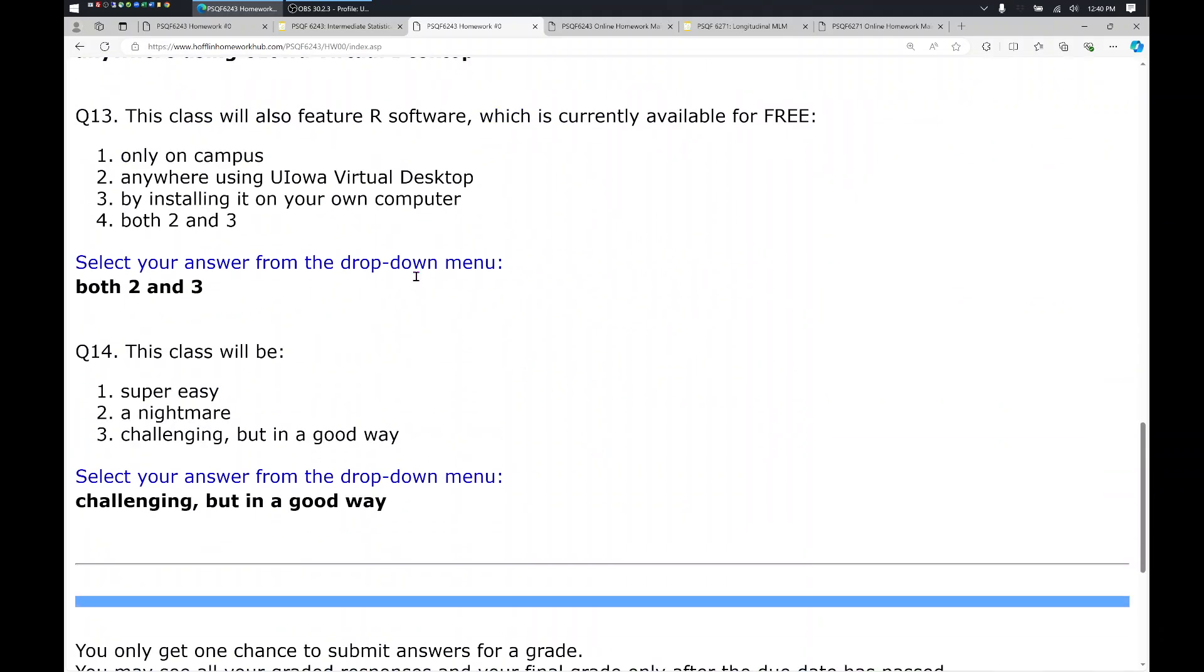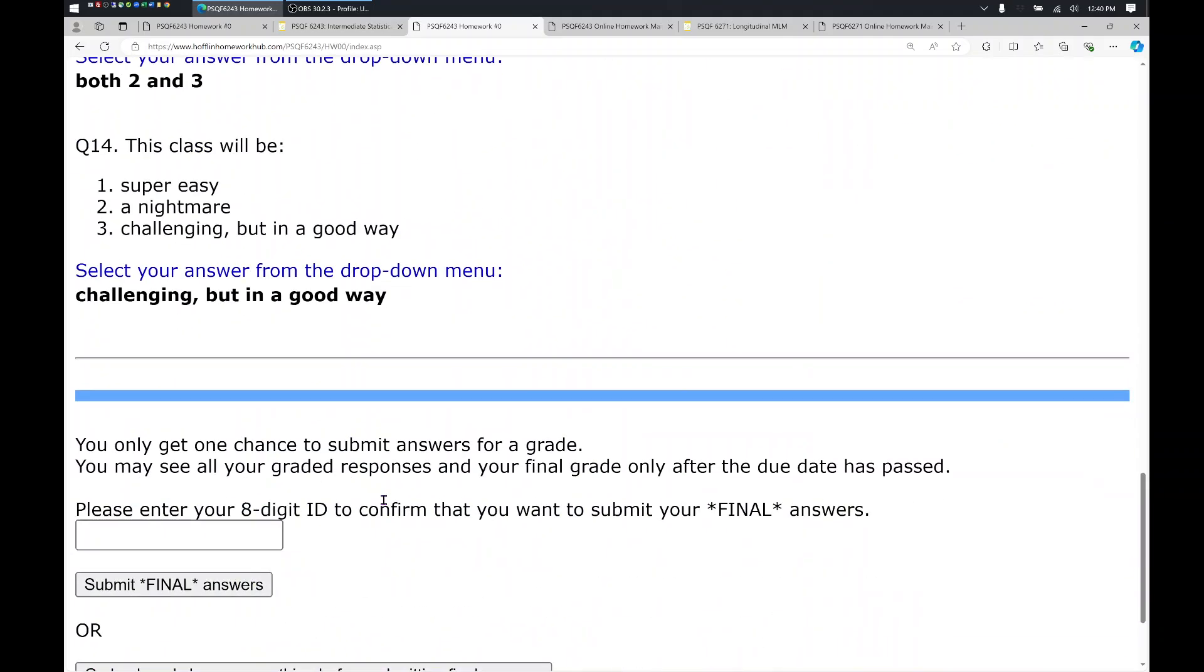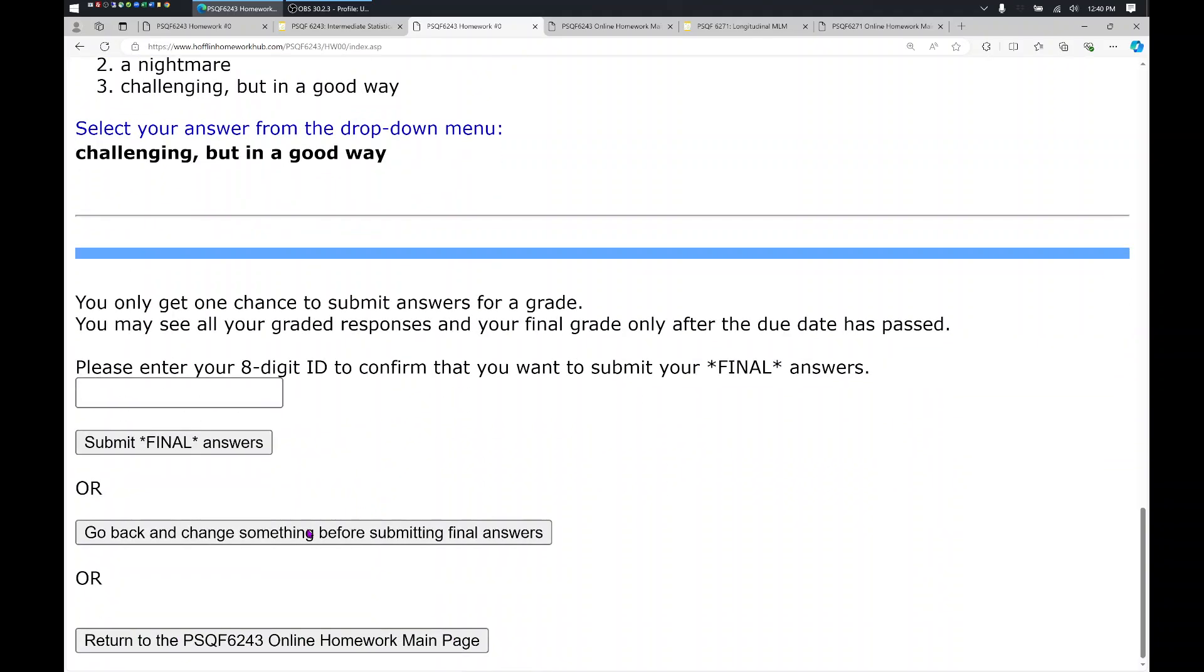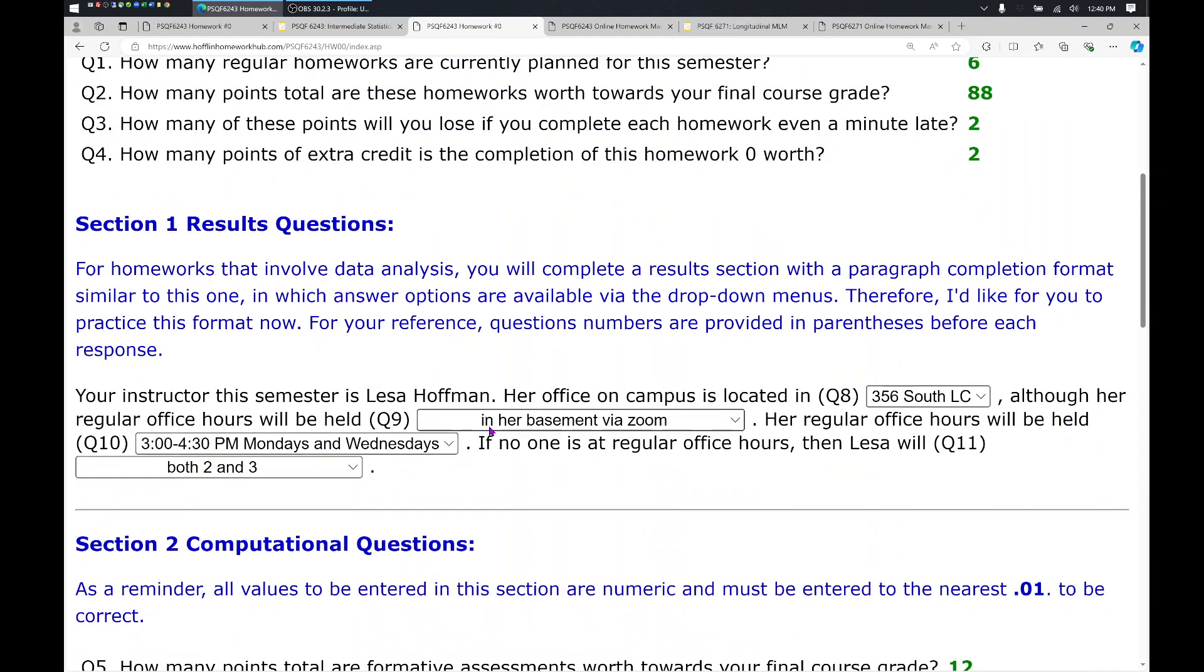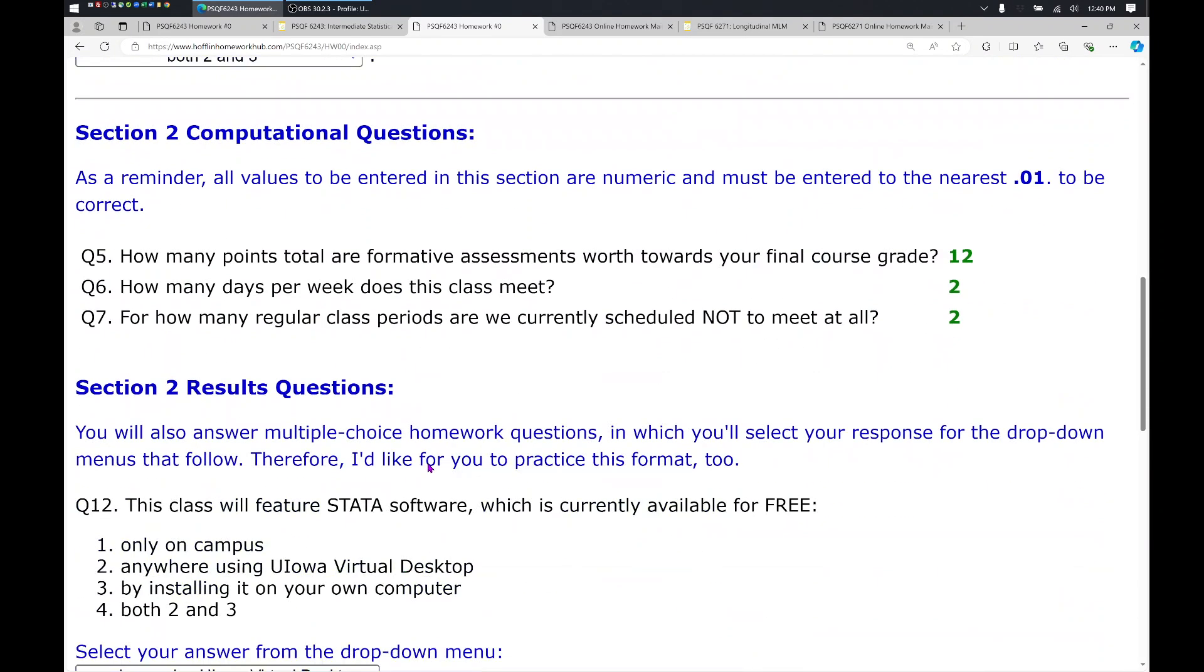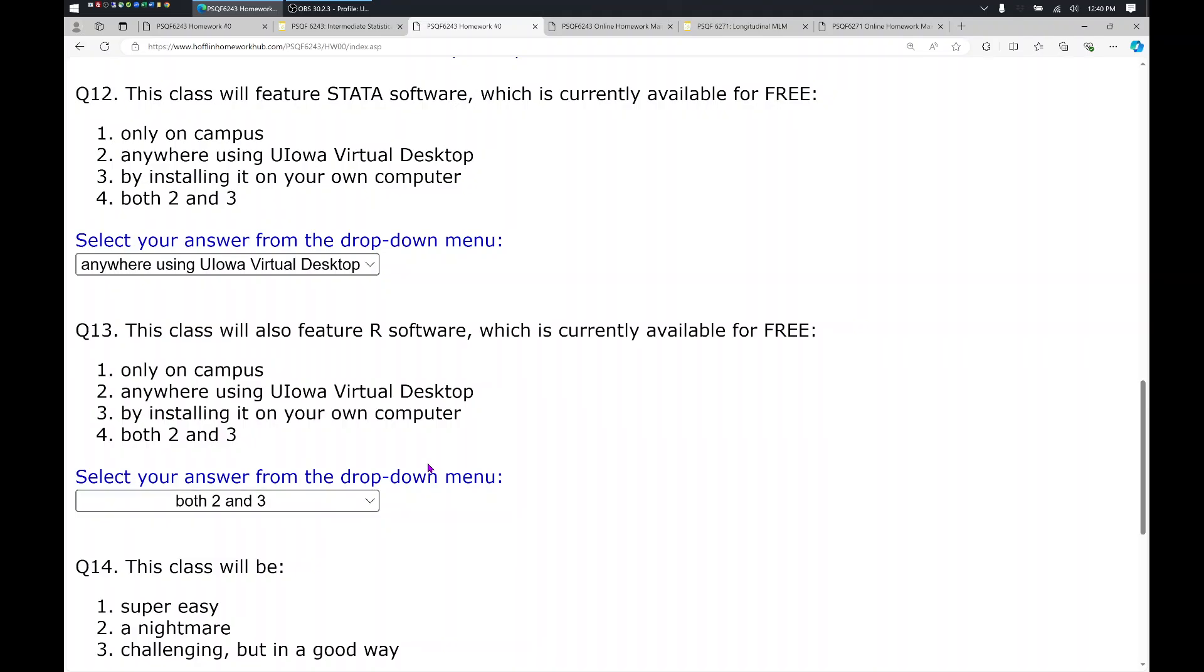And if you go through your answers and you decide that you want to change something, there's a button for that. So if you decide to change your answers, click on go back and change something, and then your choices have become available again for all the questions. That way you can decide what you'd like to answer.